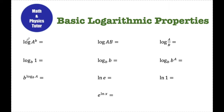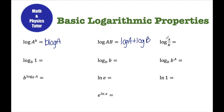So first off, if I have log of a to the b, I can rewrite this exponent as multiplication in front, so this becomes b times log of a. If I'm multiplying something — log of a times b — I can split that up into addition: log a plus log b. Log of a over b, division, I can split that up into subtraction: log of a minus log of b.